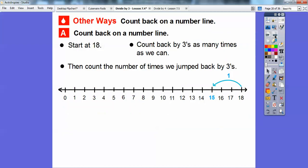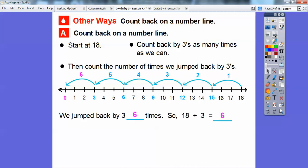Here's some other ways. One way is to count back on a number line. So we can start at 18 and then just like in the last lesson, we can count back by 3s to get 18 divided by 3. So count the number of times we jump back by 3. So here we go. There's 1, 2, 3, 4, 5. Finally, we get to 0 and there were 6 times. So we jump back by 3 six times. So 18 divided by 3 equals 6.